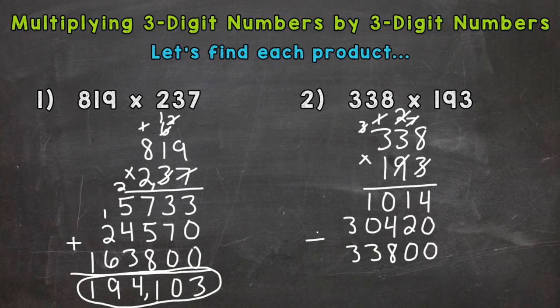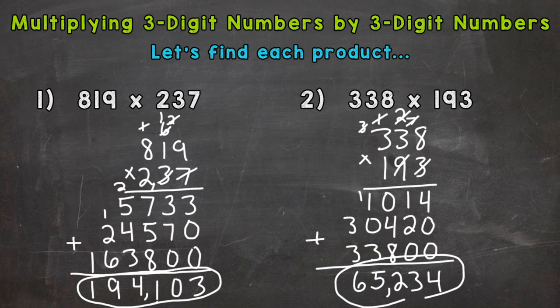We have our three partial products and we're ready to add them up to get our final answer. 4 plus 0 plus 0 is 4. 1 plus 2 plus 0 is 3. 0 plus 4 is 4 plus 8 is 12. 1 plus 1 is 2 plus 3 is 5, and then 3 plus 3 is 6. We get 65,234.